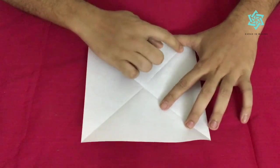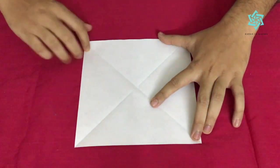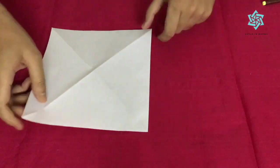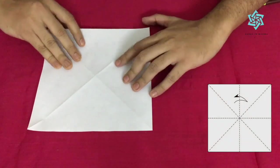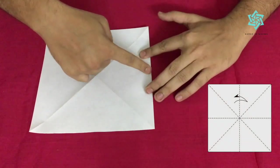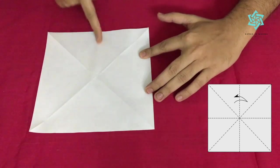We can see that there is this cross which has come up over here. Now turn this page over. Now we'll fold this in half. What we want is creases like this in a plus sign.